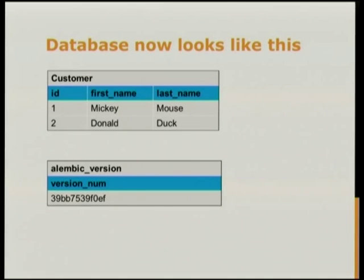Quite straightforward. Our database now looks like this. We also have an Alembic version table, which Alembic puts in by itself — you can control where it's put. It stores for you the version of your database, so your database now knows what version it's at and which upgrade steps it needs to run.